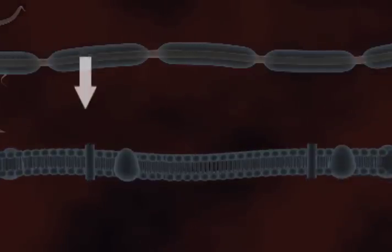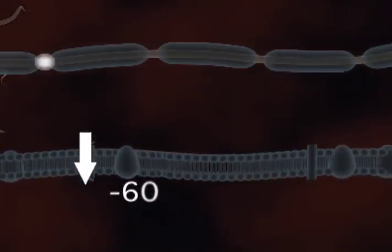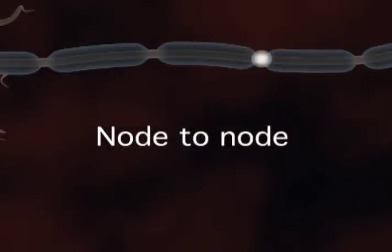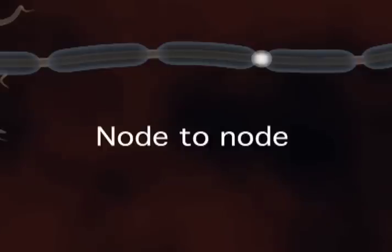Again, the sodiums diffuse through the axoplasm, reaching the next node. An action potential develops. The process is continued down the myelinated axon, passing from node to node.